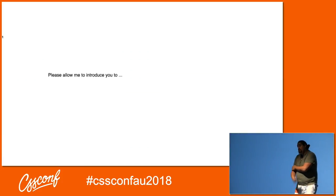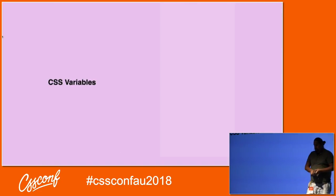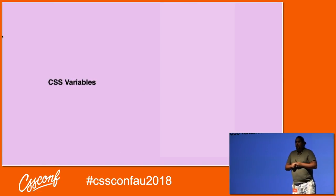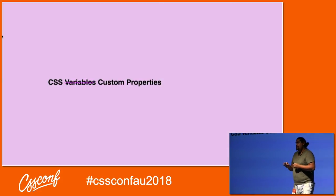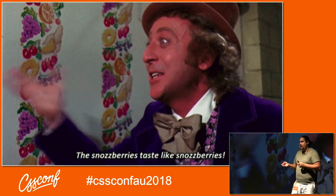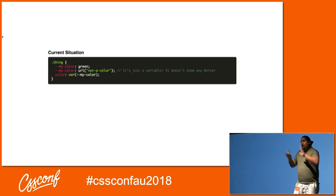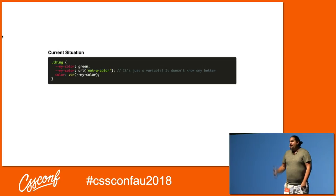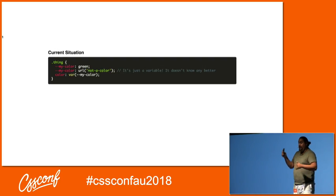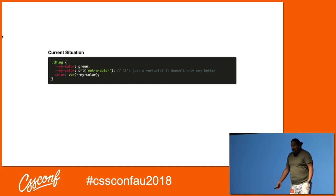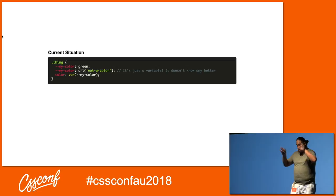Let me introduce you to window.css. The first thing we get with window.css are custom properties. With the custom properties and values spec, we can actually make things work properly. Here's our current situation: I've got a custom property called myColor set to green, then I set it again to URL — not a color. URL isn't a color, so when we go to use it for our color, everything breaks and terrible things happen.